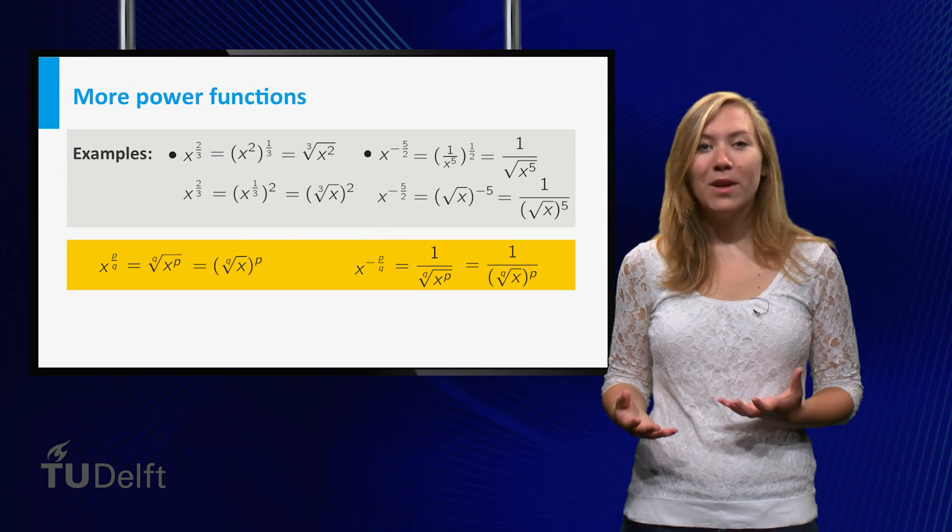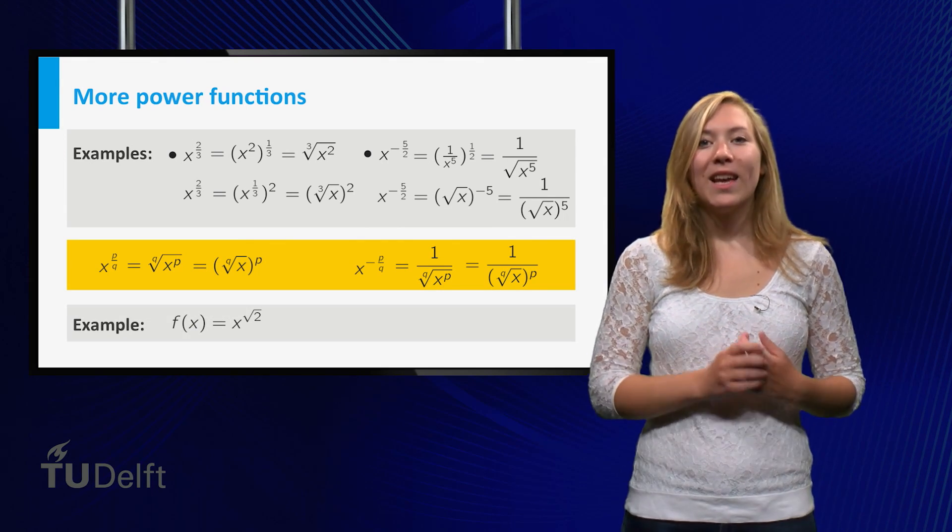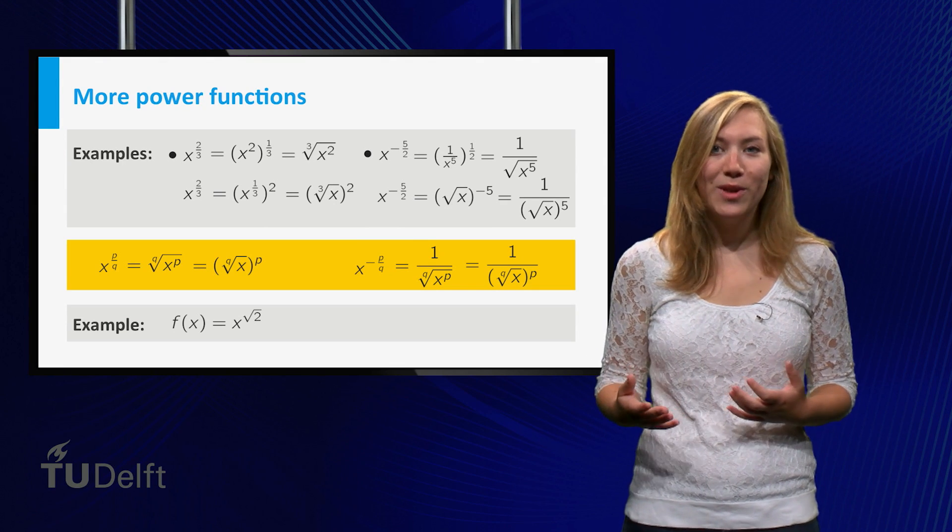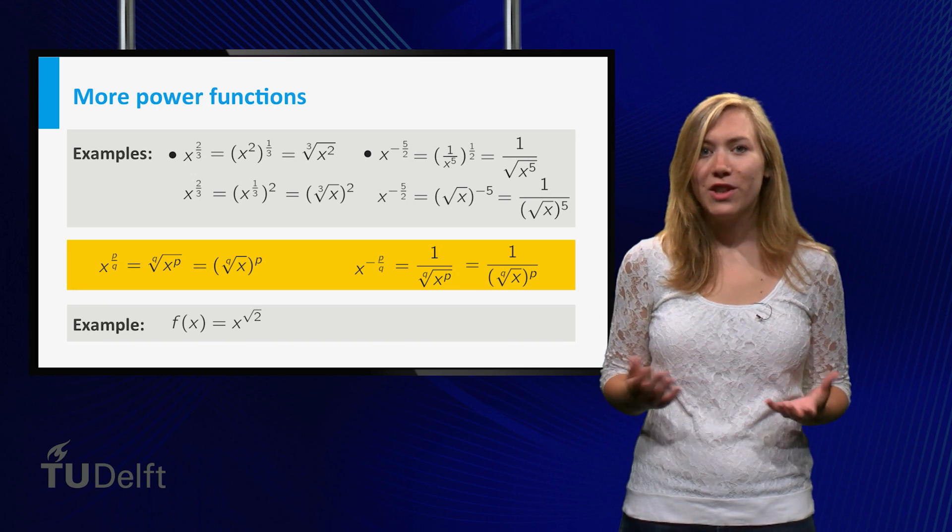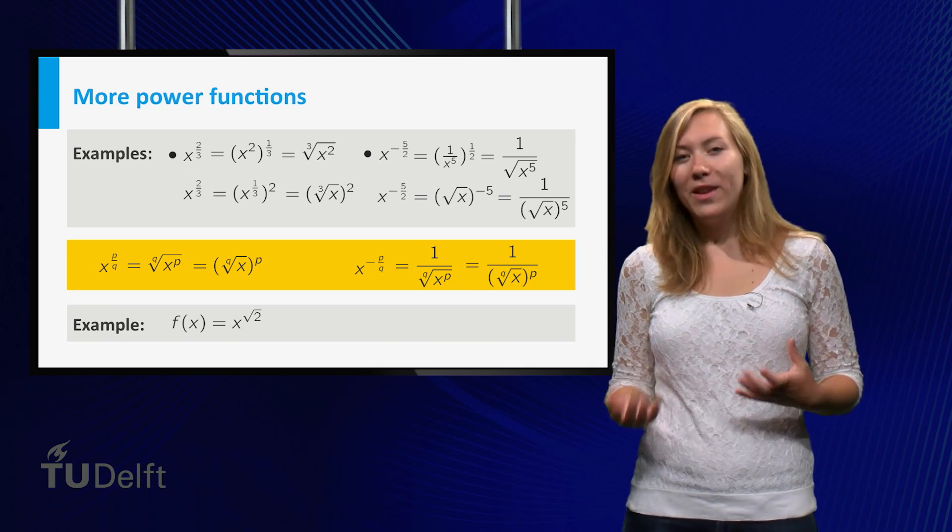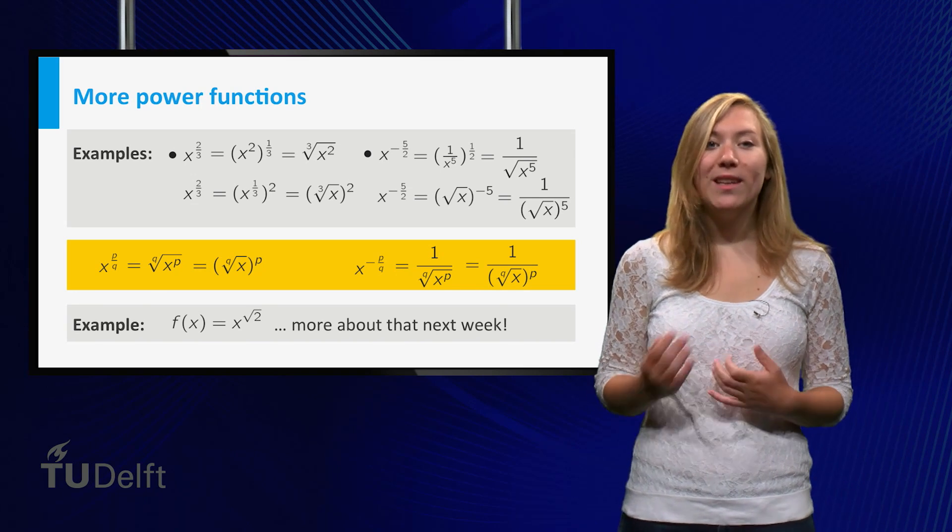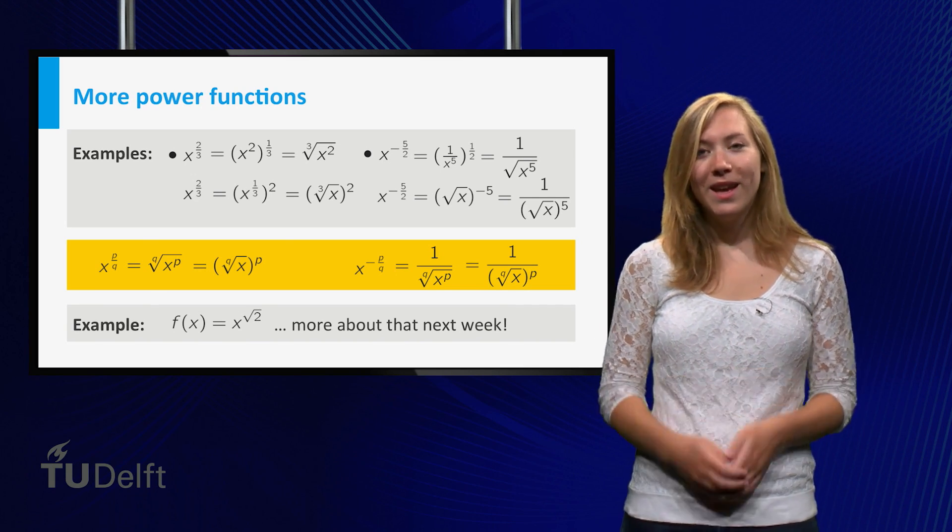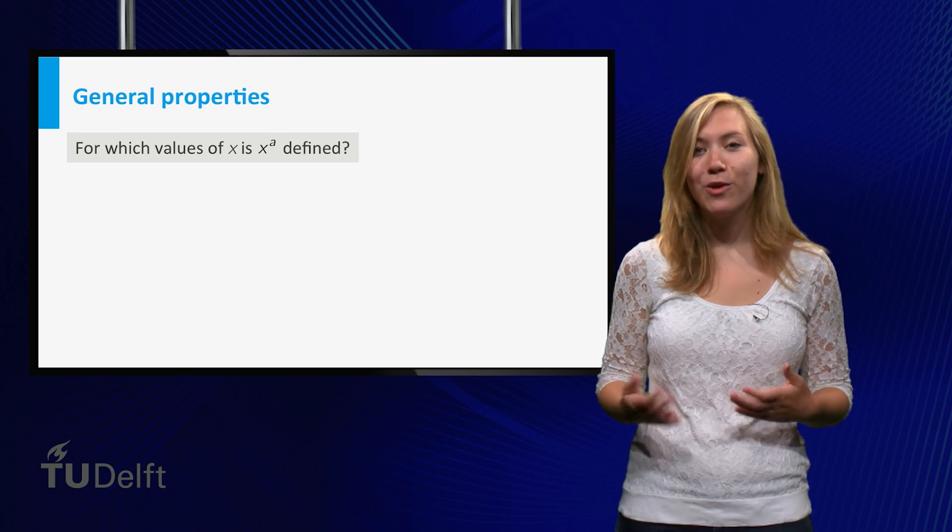Not every number is a quotient though. For example, square root of 2 cannot be written as a fraction of two integers. How do you define power functions for such exponents? This is a bit tricky, and we will return to this in the next week when dealing with exponential functions. However, I will show you the properties of power functions for general exponents.